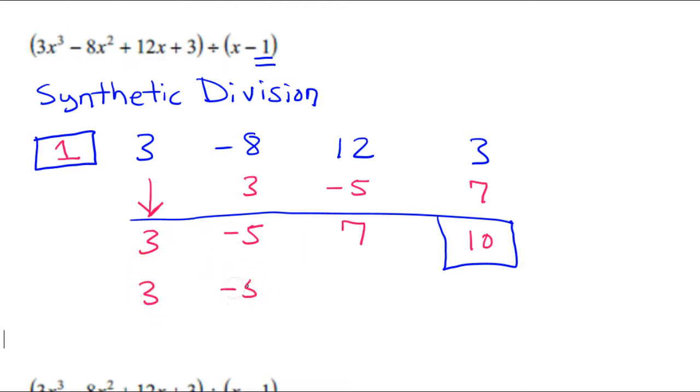So if I go ahead and put the variables back in, understanding that these are my coefficients. Then this number at the end must be the constant. Then that makes this the x term, which makes this the x squared term. So it's easier if I just go from right to left, knowing that this number will be the constant, and then the x term, and then the x squared term.